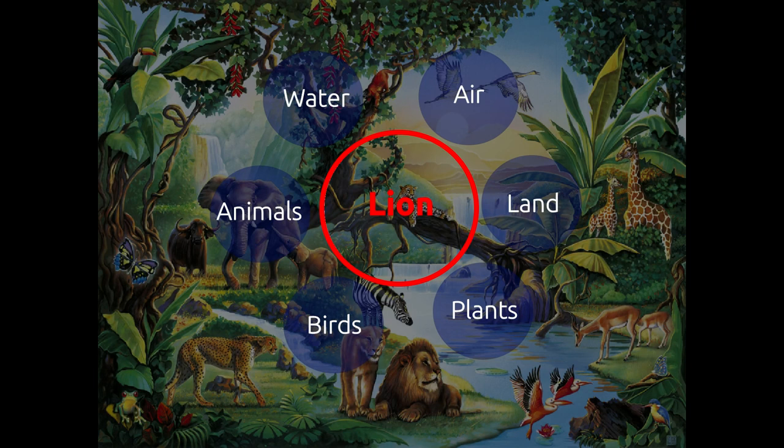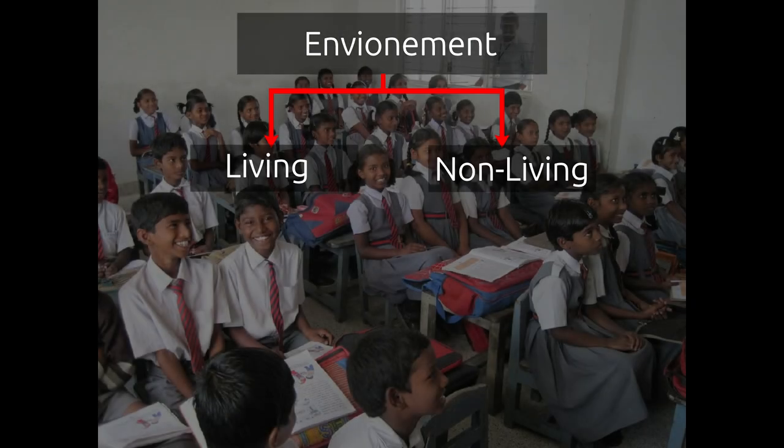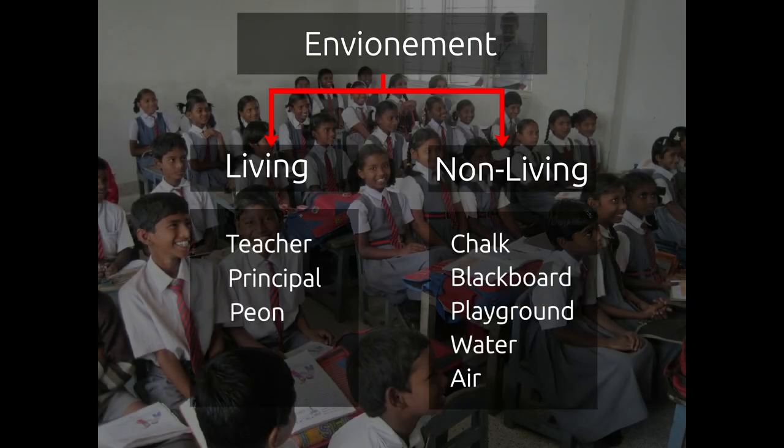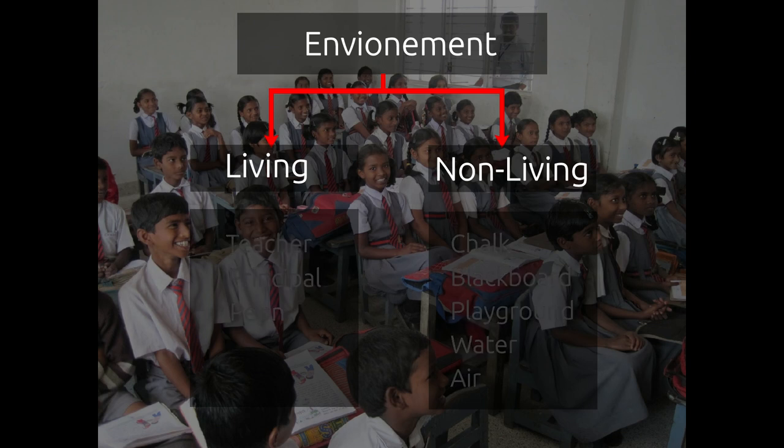Environment includes both living and non-living factors. For example, in the school, students' environment includes chalk, blackboard, teacher, principal, peon, playground, air, water, etc.